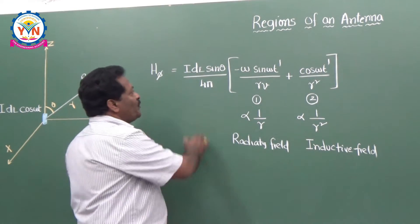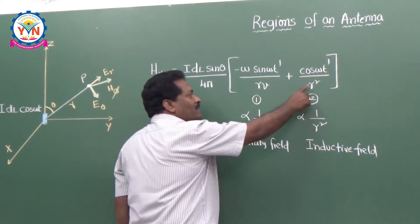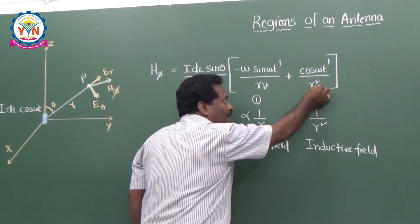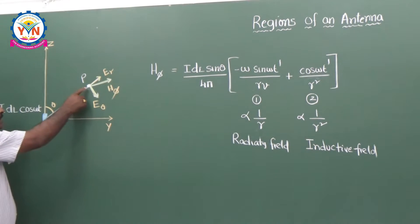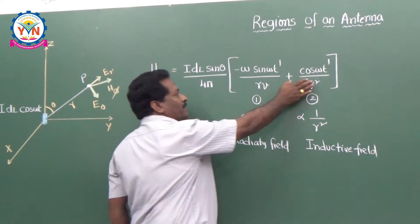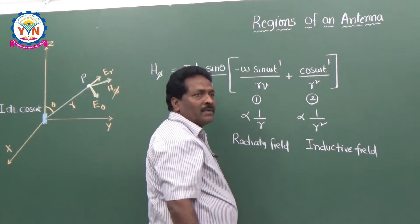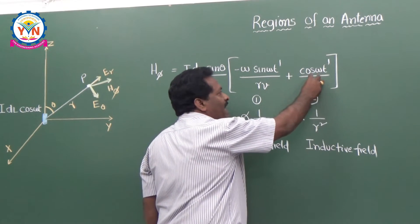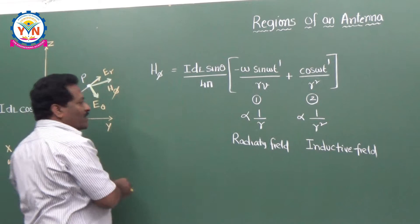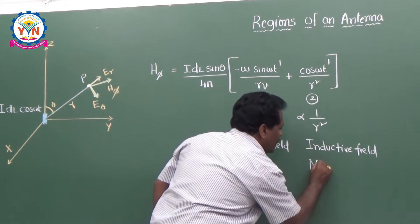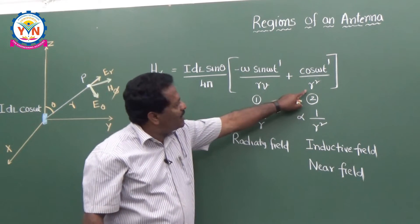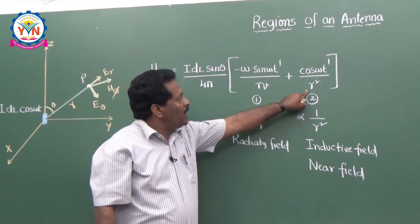The second term is inversely proportional to R², which means if R is very, very small — that is, if the distance is very small, if you are taking a point close to the antenna — then this second term is the dominating factor. That is why this inductive field is called the reactive field. It is the field nearest to the antenna, which is also called the near field. Whenever R is very small, it dominates.